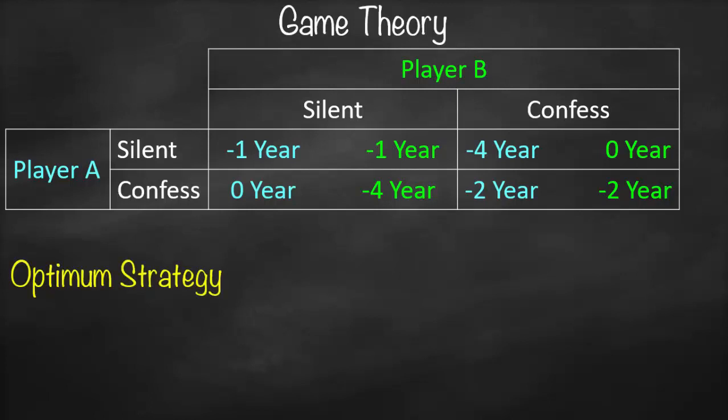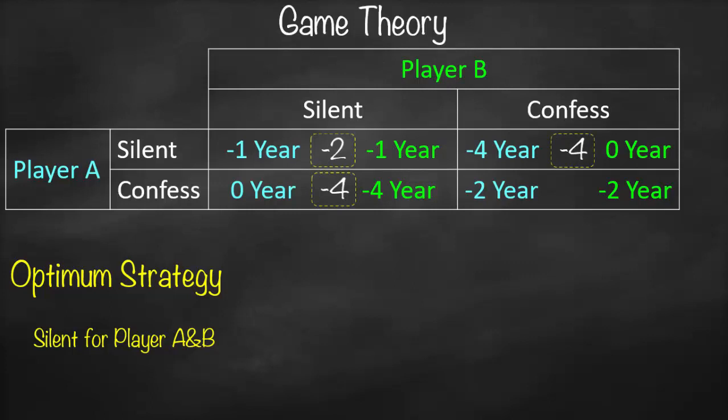What will be our optimal strategy? The optimal strategy is the best outcome for both of them. To find it, let's look at each scenario and calculate the sum. If both stay silent, the total is negative two — one year each. If player A confesses and player B stays silent, zero plus negative four is negative four, a total of four years in prison.